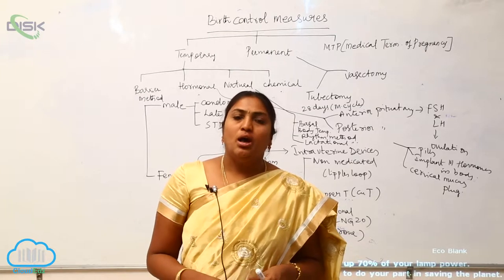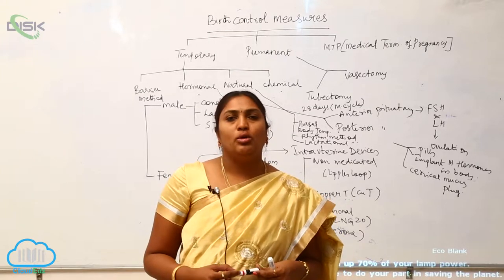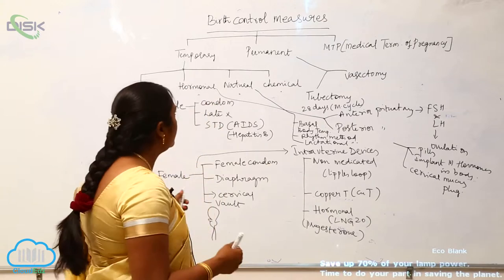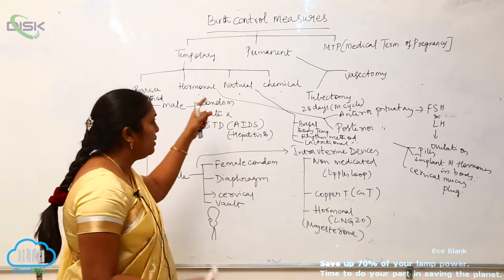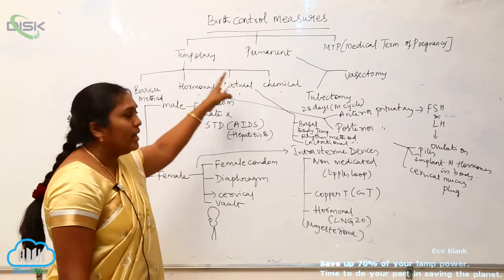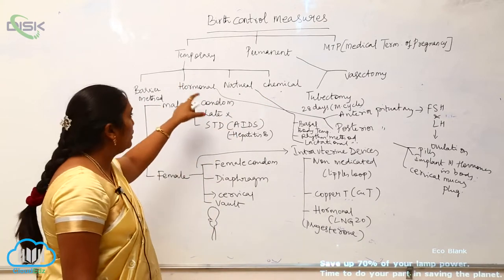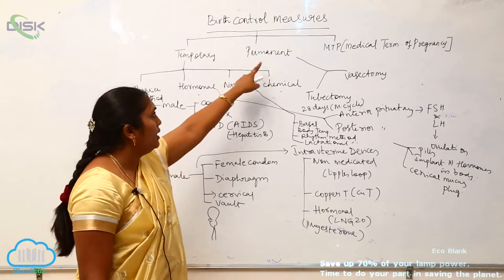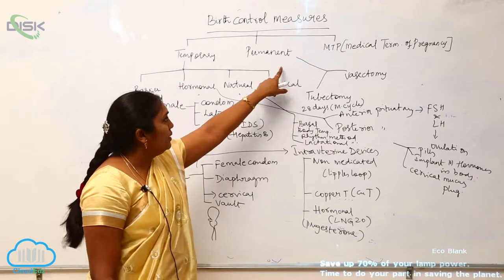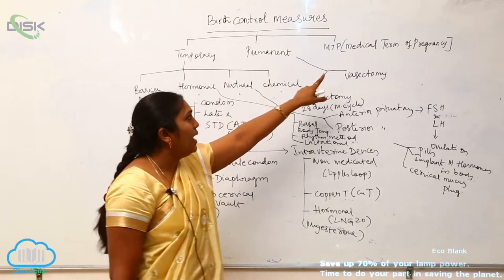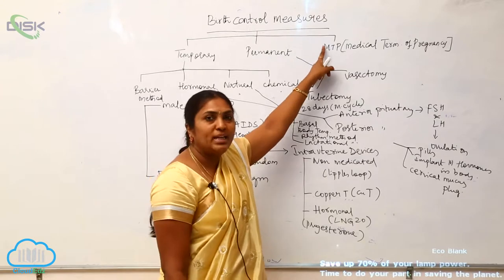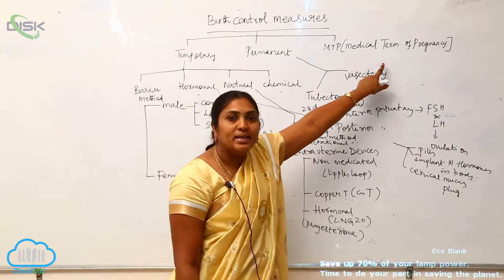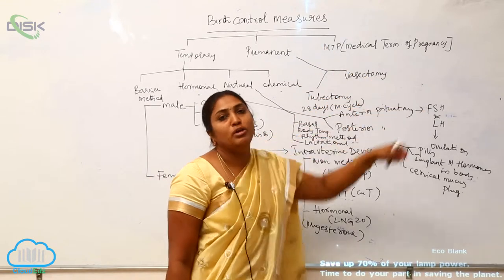Birth control measures — how to control the different types of birth. There are three types of birth control measures: first is the temporary method, second is the permanent method, and third is MTP, which means medical termination of pregnancy.